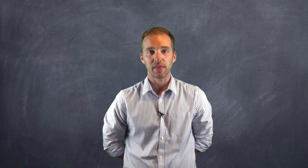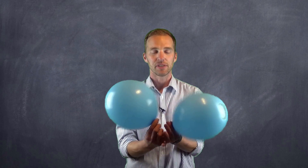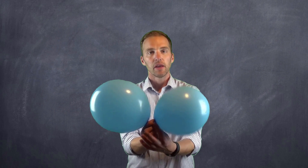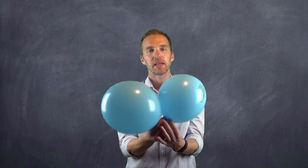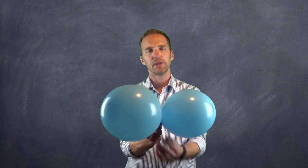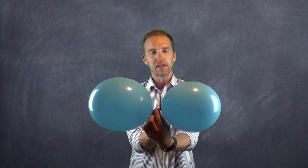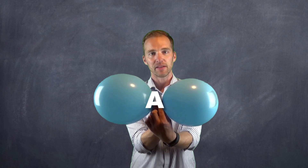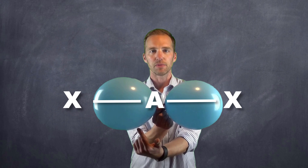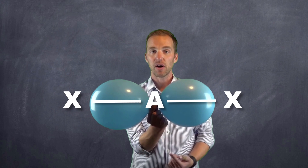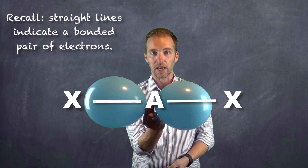Well, like most things in life, it can be answered with balloon animals. This, for example, is a snake that ate a dumbbell. Anyway, these balloons can help us illustrate what goes on between bonded atoms in a molecule. We can treat the center as an atom bonded to two other atoms. These balloons represent what we refer to as electron domains — in this instance, bonded electrons, but they could be non-bonded electrons as well.